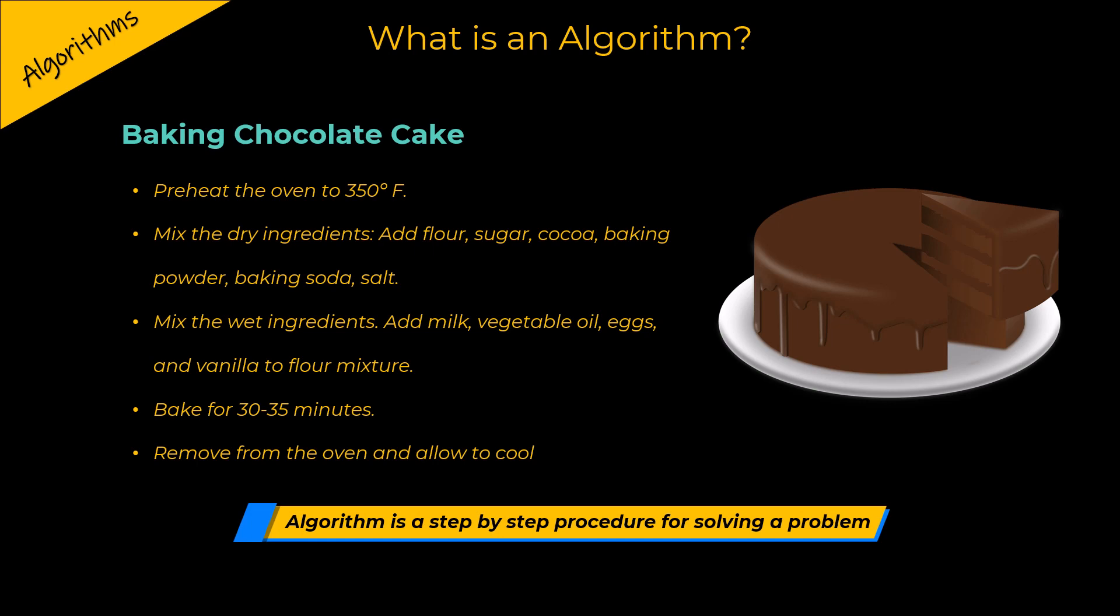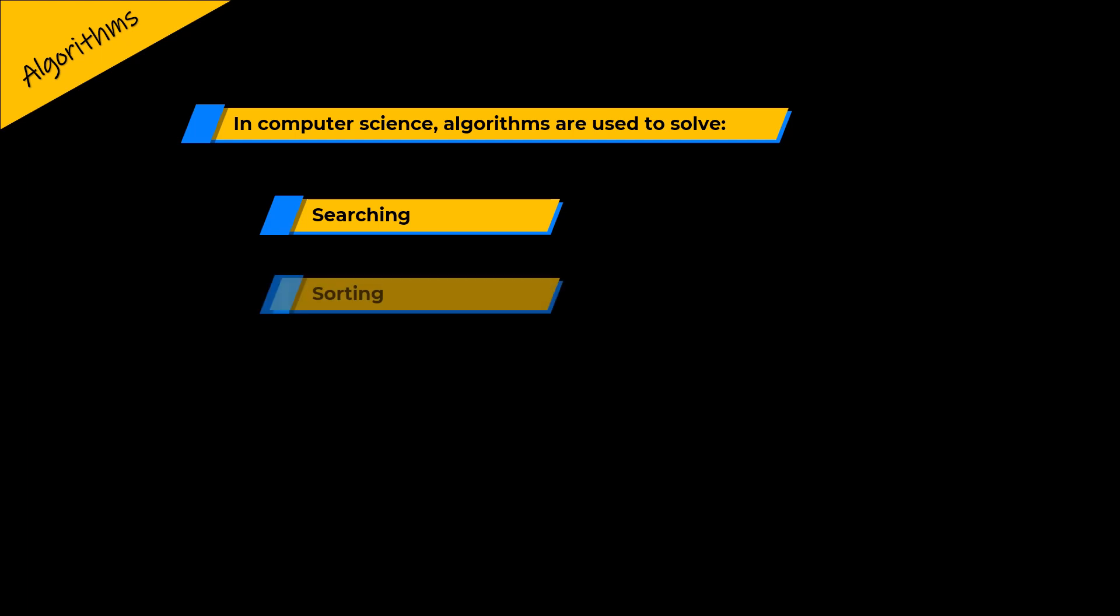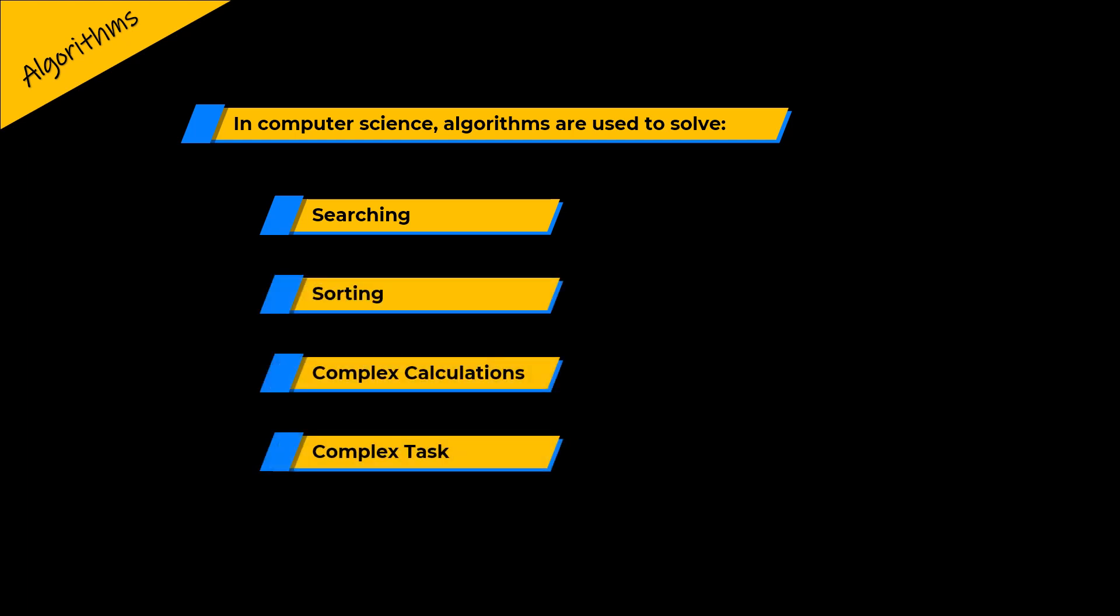So, an algorithm is a step-by-step procedure for solving a problem. In computer science, algorithms are used to solve a wide variety of problems, such as searching, sorting, solving complex calculations, and complex tasks. The algorithms can be implemented using different programming languages and executed on computers to get the result or output.